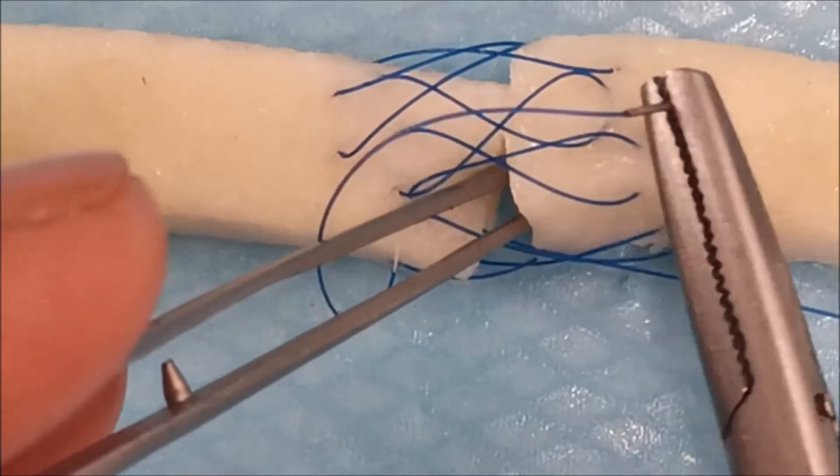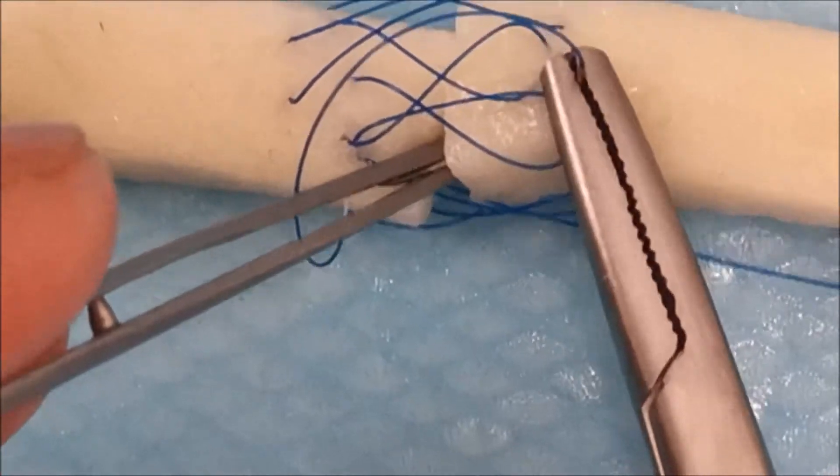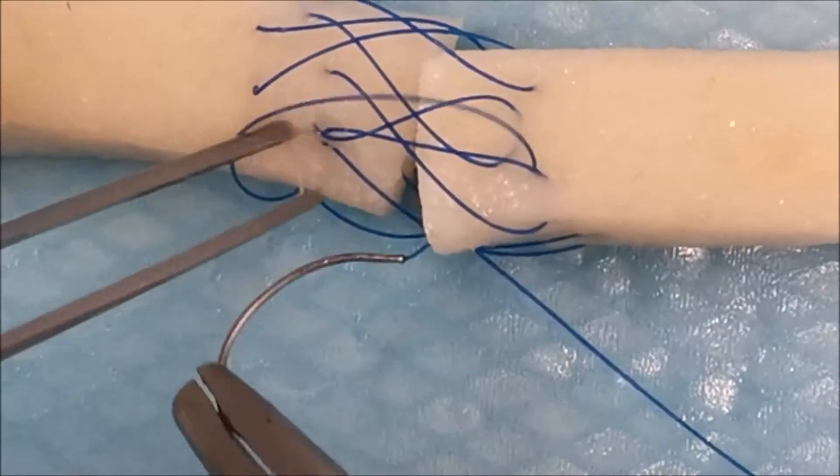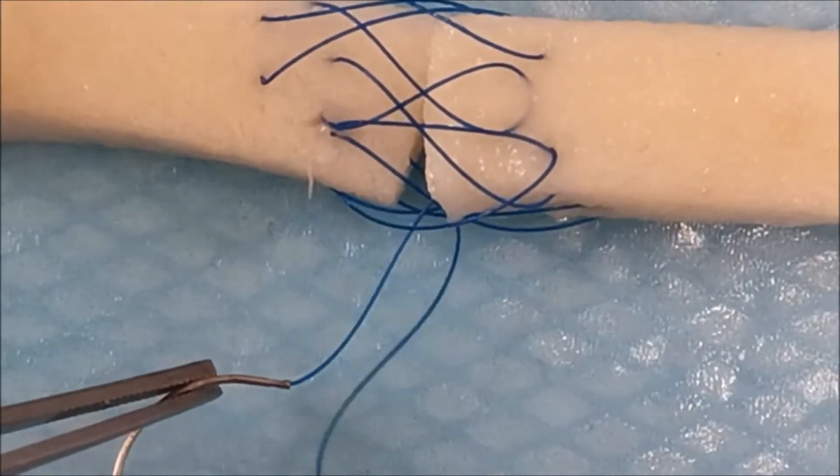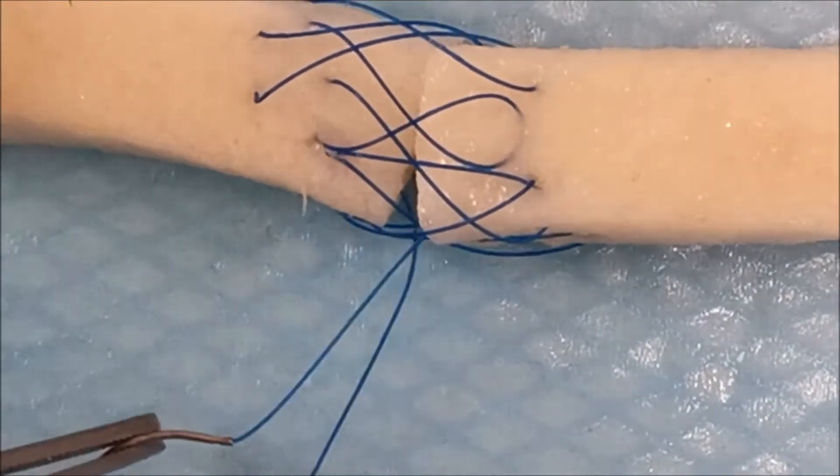I like to end it by going in the middle of the tendon again in order to bury my knot. As you can see, there's a net-like lattice figure of eight structure that surrounds the tendon.